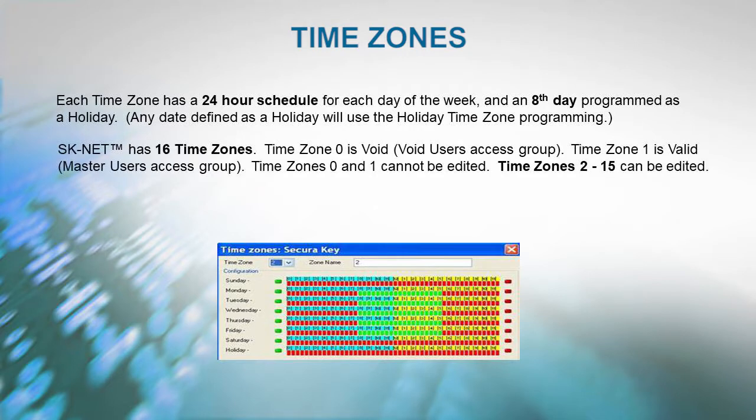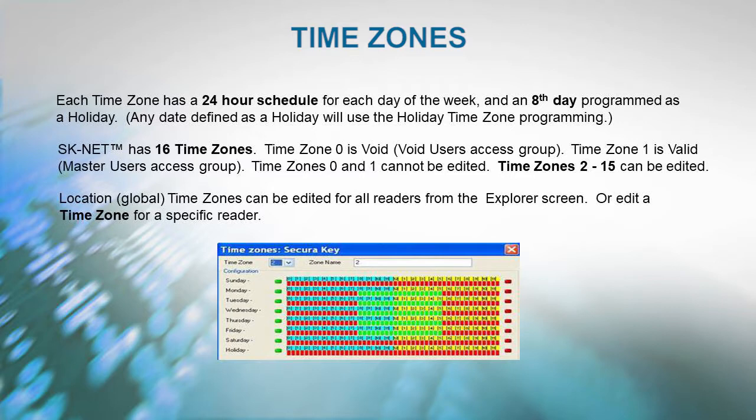SKNet has 16 time zones. Time zone 0 is always void, and time zone 1 is always valid. Time zones 0 and 1 cannot be edited. Time zones 2 through 15 can be edited any way you choose. Global time zones can be edited for all readers from the Explorer screen, or you can edit a time zone for a specific reader.